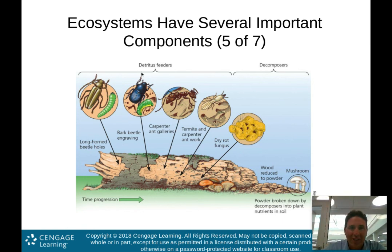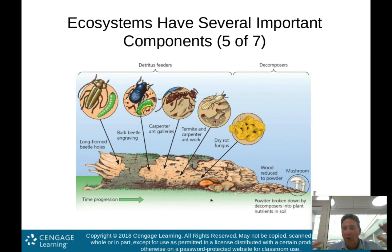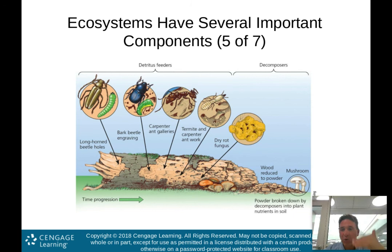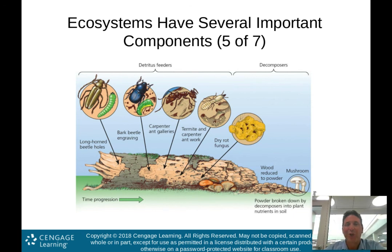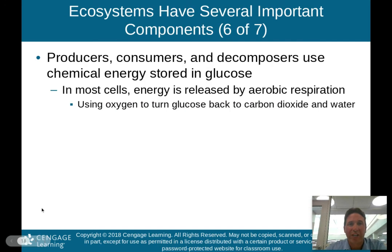The decomposers and detritus feeders — the detritivores — all work together to decompose matter. They're consumers, but they're decomposing organic matter so that the nutrients can be reused. These organisms leave some nutrients in the soil that can be recycled to produce another tree, and the whole system starts over again.